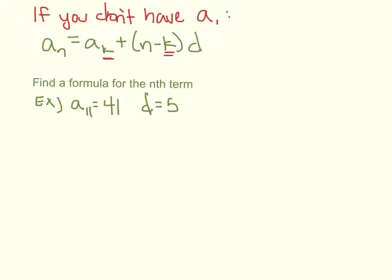So here, if I want to find a formula for the nth term, I wasn't given a₁. I was given a₁₁ with d equal to 5. I can say, okay, aₙ equals, what's the aₖ that we're going to use?